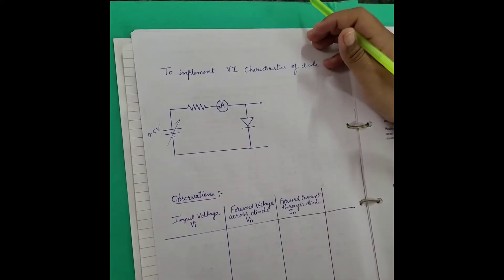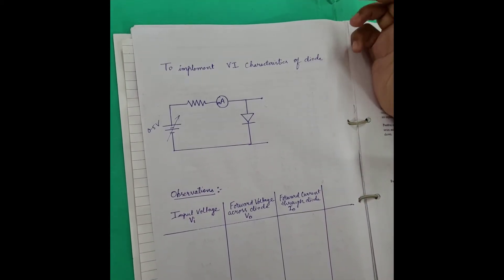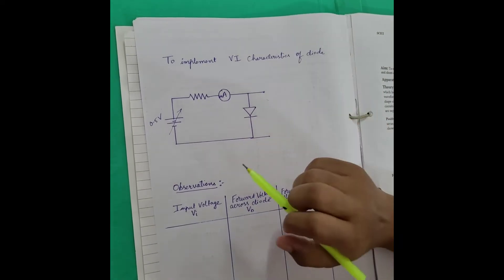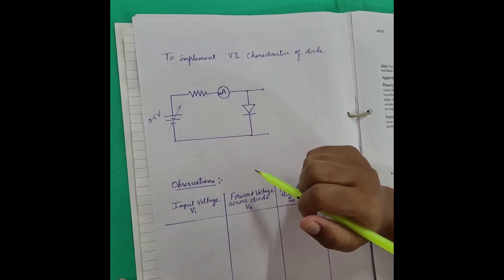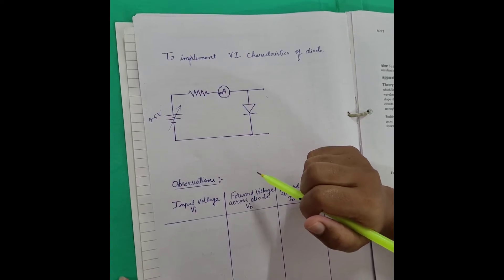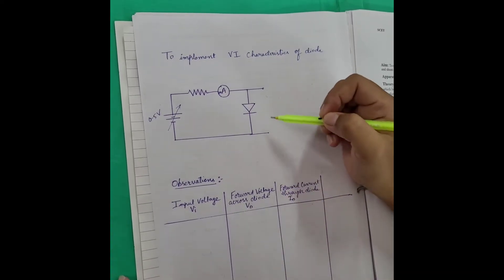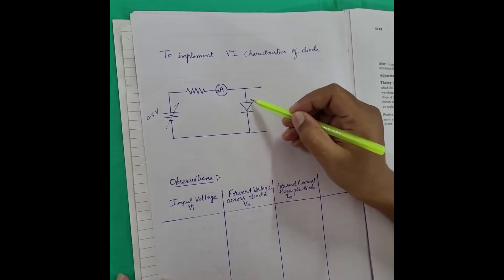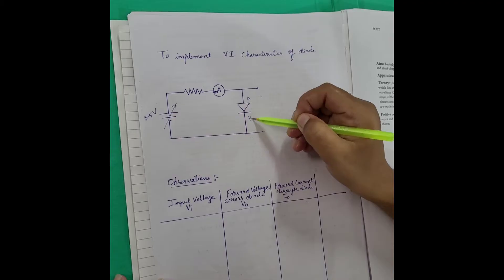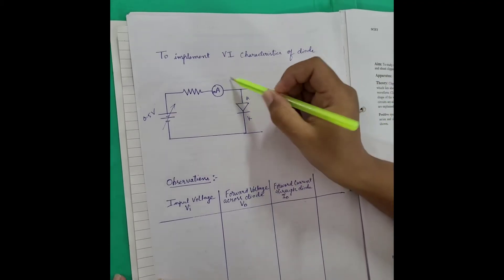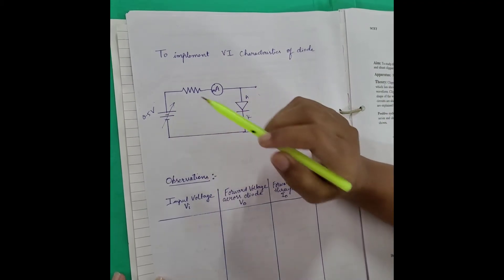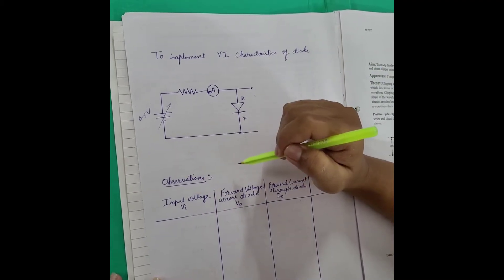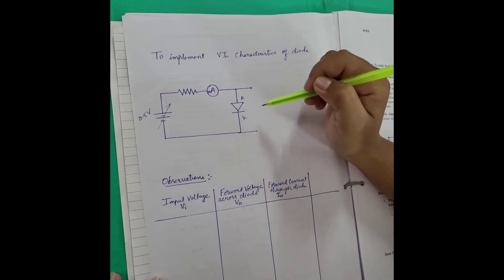Hello students, today we are going to study and implement the VI characteristics of diode. A diode is a device which flows current only in one direction. When the anode is connected to the positive supply of the voltage and cathode is connected to the negative supply of the voltage, then the diode is in forward bias.